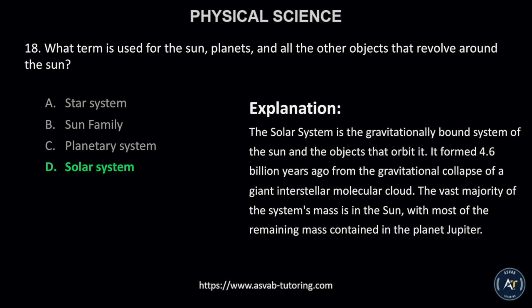This is because the solar system is the gravitationally bound system of the sun and the objects that orbit it. It formed 4.6 billion years ago from the gravitational collapse of a giant interstellar molecular cloud. The vast majority of the system's mass is in the sun, with most of the remaining mass contained in the planet Jupiter.